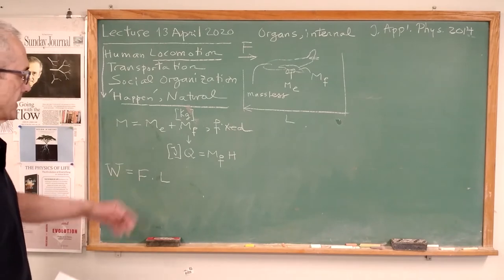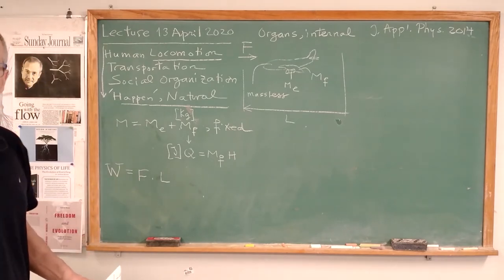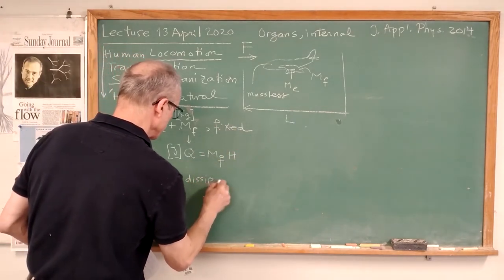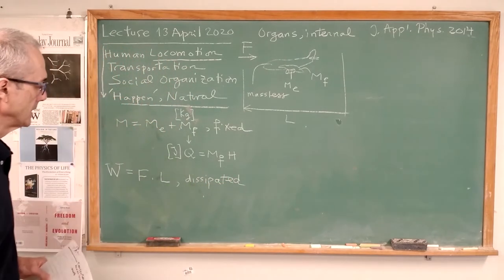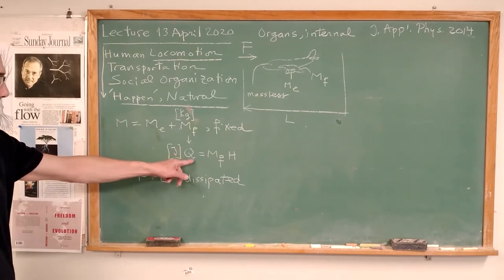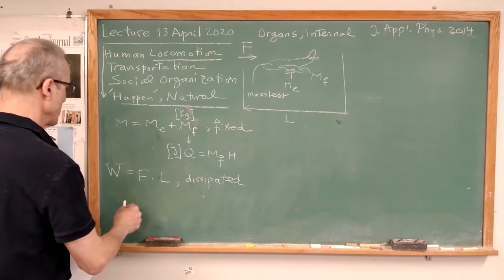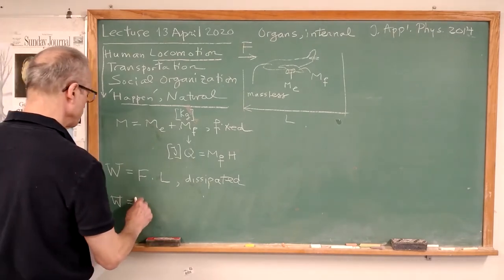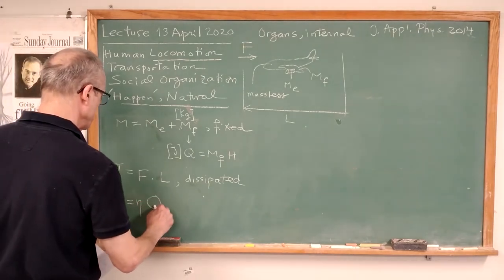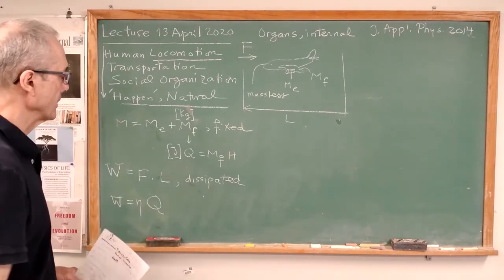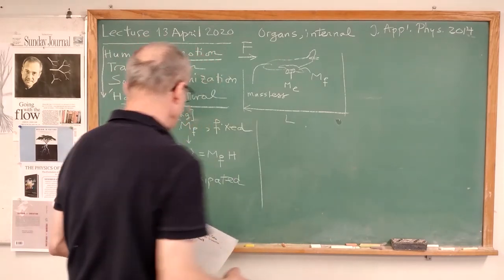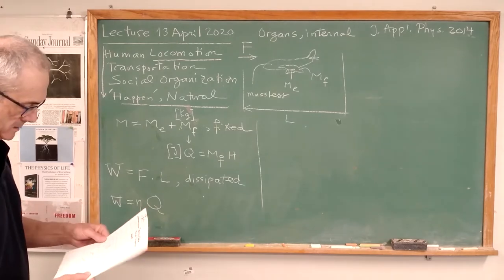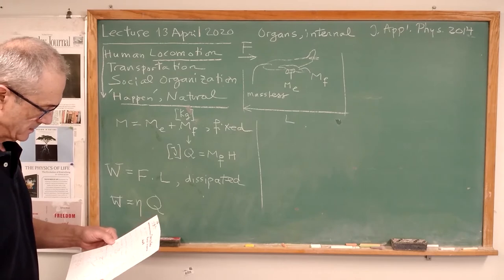This particular heat input is used by the engine to generate the work that is necessary for moving the body horizontally on the landscape. So the work is the product of the force of resistance encountered by the mover times the distance of travel L. So this body has traveled a distance L. We'll get to this sort of thing a little bit later. What is the work that is being dissipated through the movement? So this is dissipated.